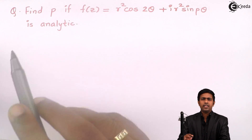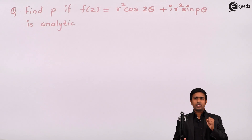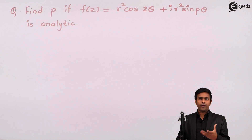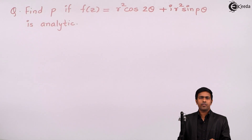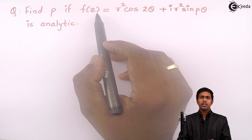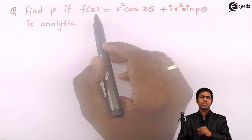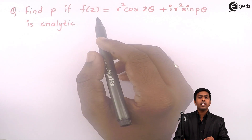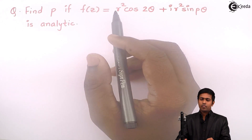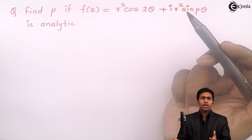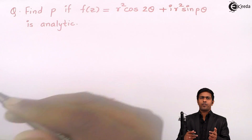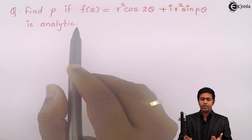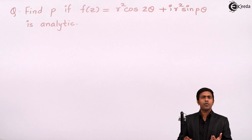Whenever a given function is analytic, we know that it satisfies the Cauchy-Riemann equations. Since this function is given as analytic, it should satisfy the Cauchy-Riemann equations. So let us find the Cauchy-Riemann equations and from those equations we will find out the value of p.